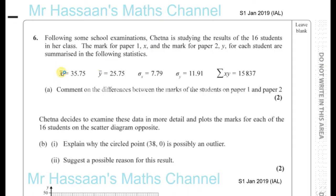X bar, the average for paper X, was 35.75, and Y bar, the average for paper 2, was 25.75. The standard deviation of X, sigma X, was 7.79, and the standard deviation of Y is 11.91, and the sum of X times Y is 15,837.